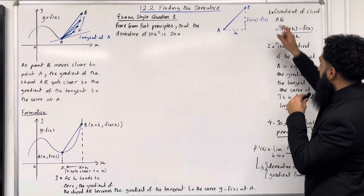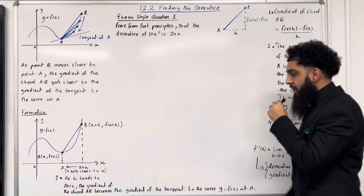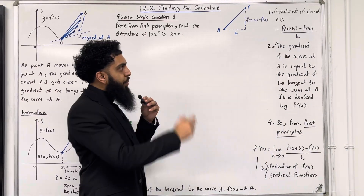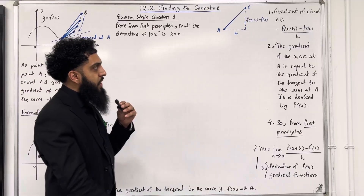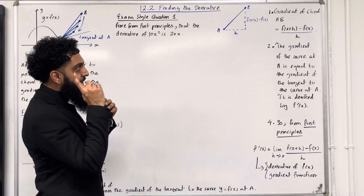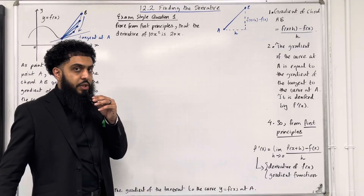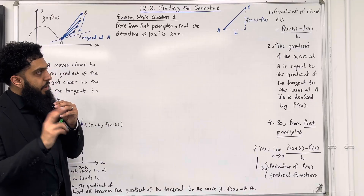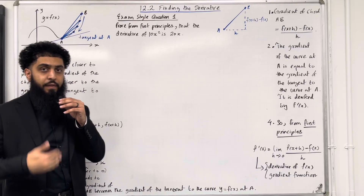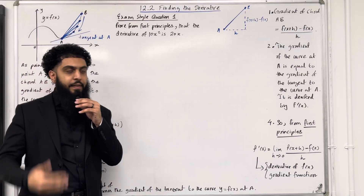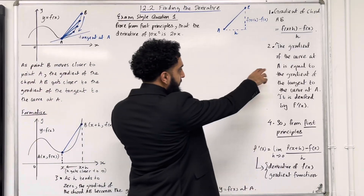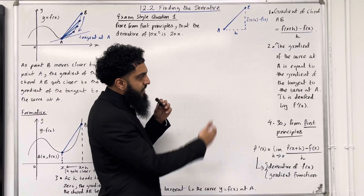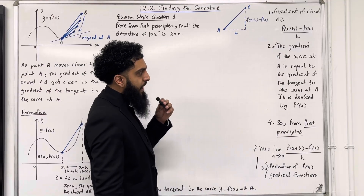Step number one: the gradient of the chord AB is given by change in y over change in x. That is step one of differentiation from first principles. Step number two, a very important key fact: the gradient of the curve at A is equal to the gradient of the tangent to the curve at A.